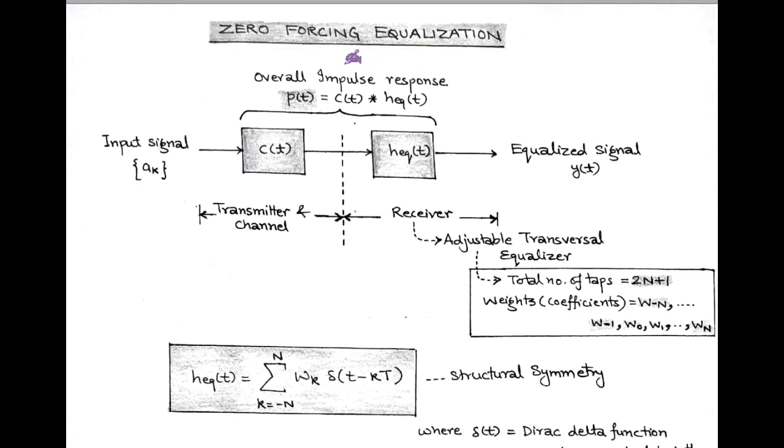In zero forcing equalization, we consider impulse response C(T), which corresponds to the combined characteristic of both transmitter and channel. At the receiver side, we use adjustable transversal equalizer, that is the type of tapped delay line filter and is denoted by equalized impulse response H(T). Here 2n+1 number of taps are considered on the basis of symmetry and corresponding weight values are w minus n to wn. The input binary sequence Ak is applied to the input block C(T) and at the output of the transversal filter, we get an equalized signal Y(T).